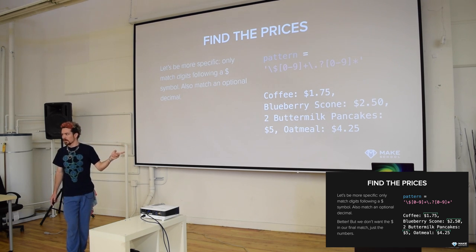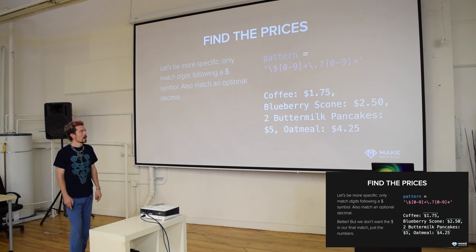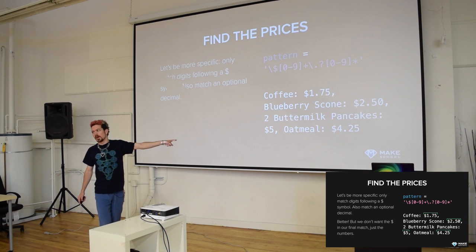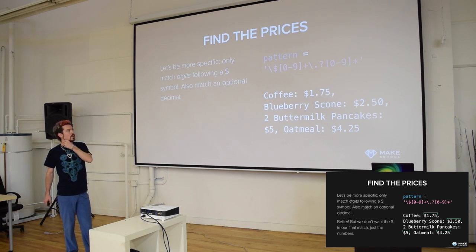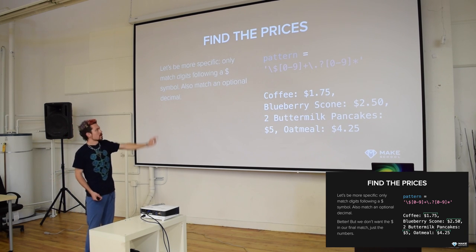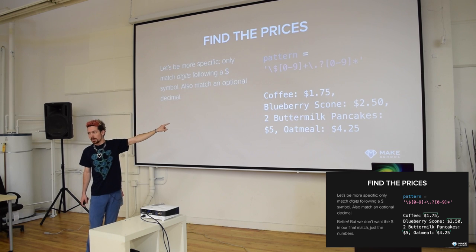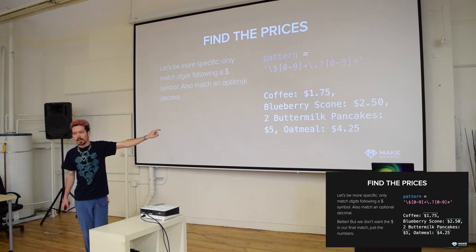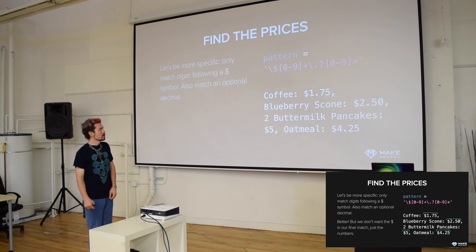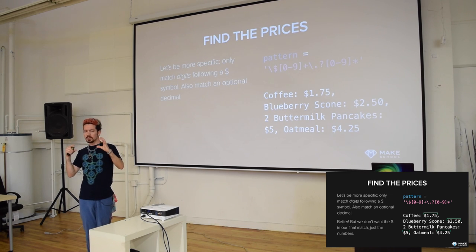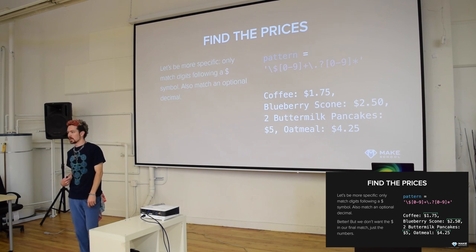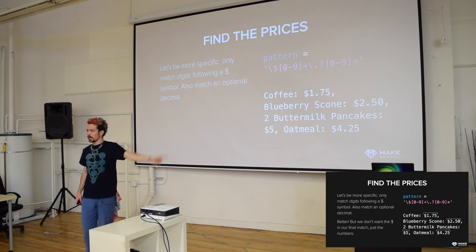Why is the question mark after the backslash period and not before it? Because 'five dollars' has no decimal point. These three special characters - plus, question mark, and asterisk - immediately follow the sub-pattern they modify. So: the first digit group matched one or more times with plus, then the period matched zero or one time with question mark, then the second digit group matched zero or more times with asterisk.